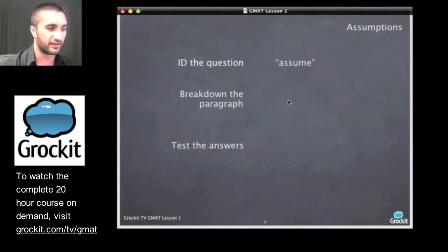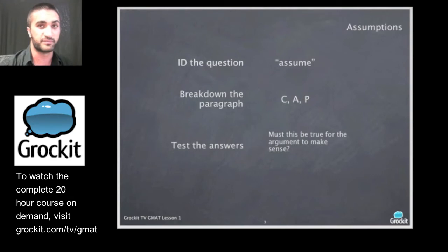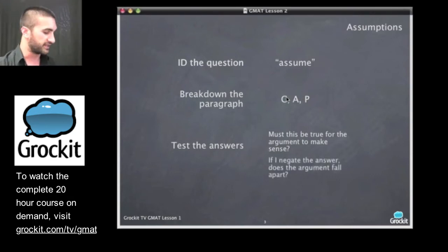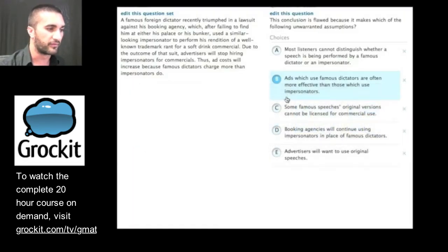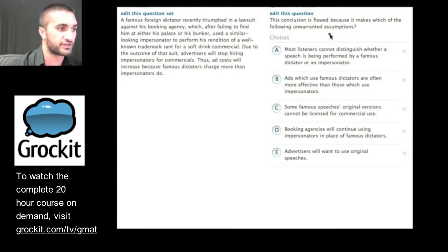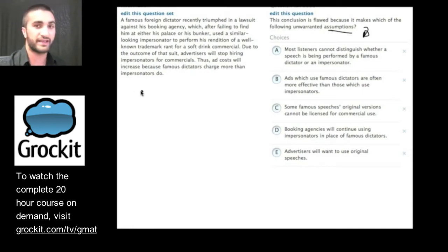Let's go ahead and I don't want to write that all out. So we're looking for the word assume. We're looking for conclusion, assumption, and premise. We're asking ourselves, must this be true for the argument to make sense? And if we negate the answer, the argument should fall apart. Let's go ahead and take a look at an example right now. This is actually a pretty difficult assumption question. Let's go ahead and read it. The question first, we always start with the question. This conclusion is flawed, so we might be thinking it's a flaw question, which we'll get to in a later critical reasoning class. But if we keep reading, we say because it makes which of the following unwarranted assumptions. So we know that these are a bunch of assumptions down here, and it's our job to identify which is the one. So go ahead and take a moment to read this paragraph and break it down.